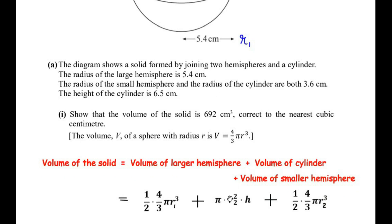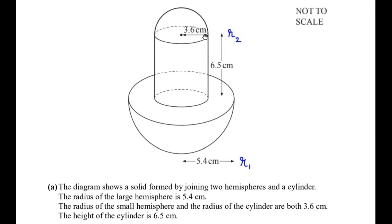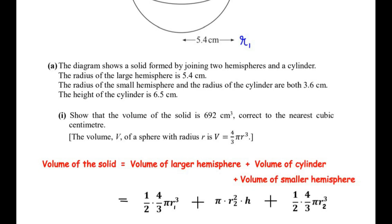The formula for the volume of a cylinder is πr²h. Since the radius of the cylinder is the same as the radius of the small hemisphere, we use r2 for the cylinder's radius: πr2²h. The volume of the smaller hemisphere is again half the volume of a sphere: (1/2) × (4/3) × π × r2³. Now we substitute the values of r1, r2, and the height of the cylinder.